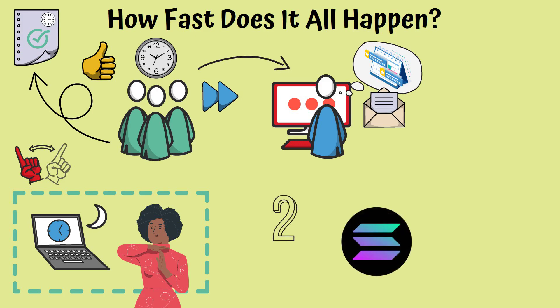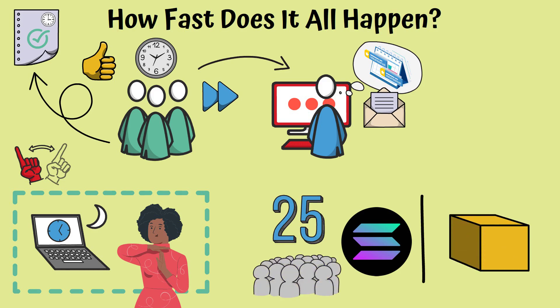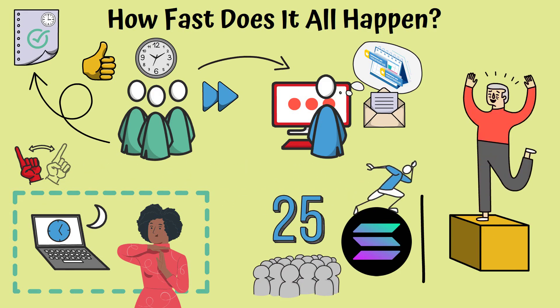By contrast, while Solana confirms 25 blocks proposed by 25 different validators, other networks could confirm only one. That is quite the speed, wouldn't you agree? Watch out, Road Runner, you have competition!